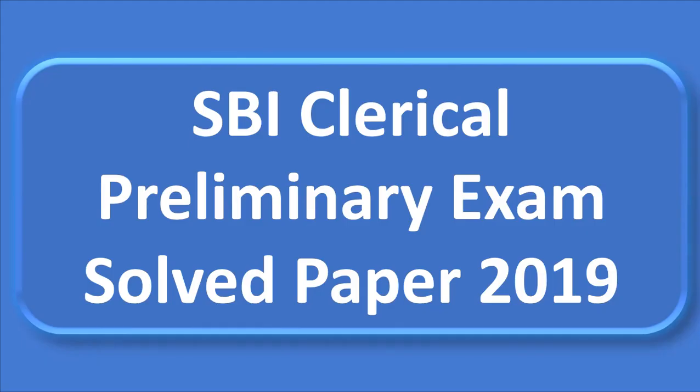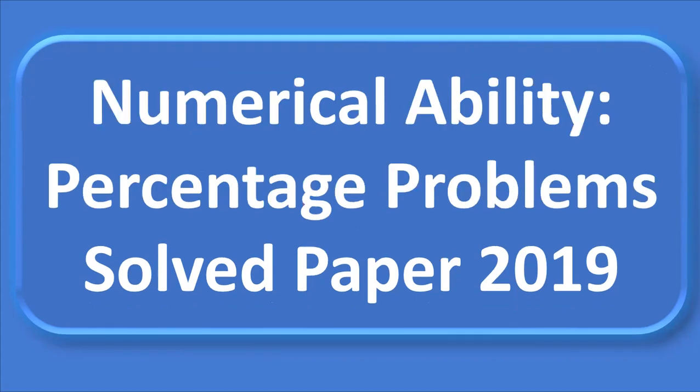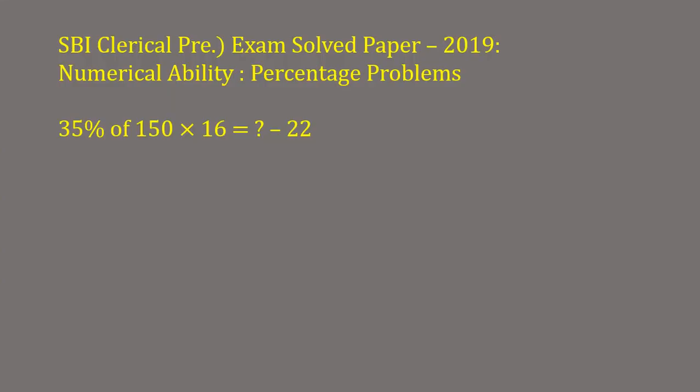Hello everyone, today I am going to solve the questions from the question paper of SBI Clerical Preliminary Exam 2019, numerical ability part. Under that, I am going to solve the questions related to percentage topic. The problem is: 35 percent of 150 into 16 is equal to what minus 22?